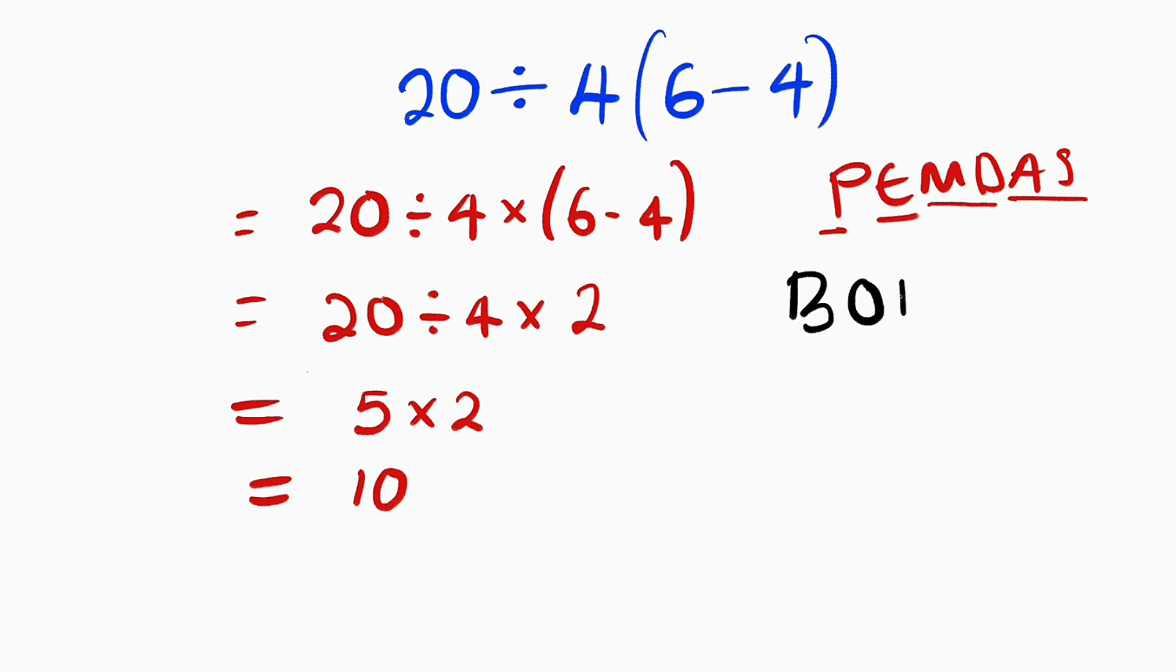BODMAS. B stands for bracket. You have to simplify what is right inside that bracket. 6 minus 4 is 2. O stands for orders: exponents, logarithms, and so on.